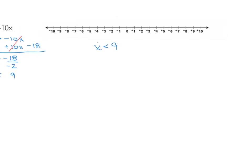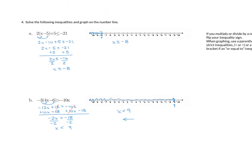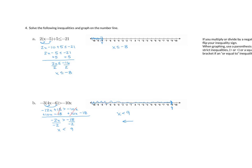We want to go ahead and graph this. We identify 9 on the number line. My arrow on the inequality is pointing to the left, so we shade to the left. This is a strict inequality — it doesn't have a line underneath — so we use a parenthesis. That takes care of our graphing inequalities and finishes off our linear equations and inequalities in one variable.